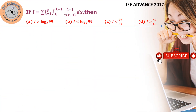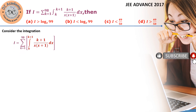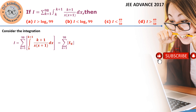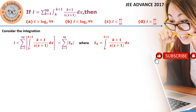Let's consider the integration I. We need to add each and every term after performing the integrations. It is obviously not straightforward, so there should be some trick. We define sk as the partial sum — that is, sk is the integration from k to k+1 of (k+1) divided by x(x+1).